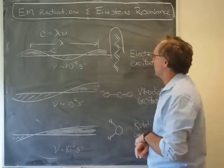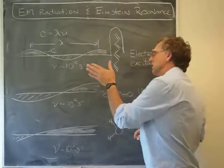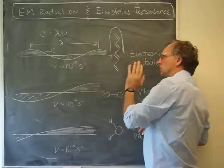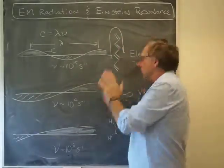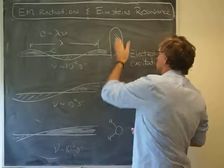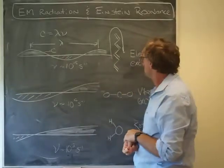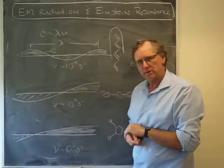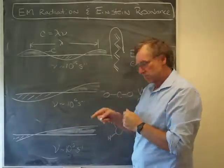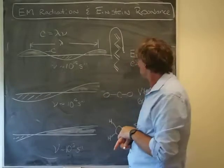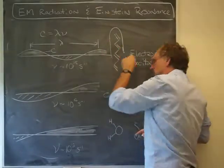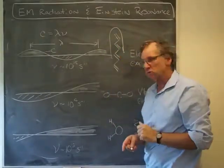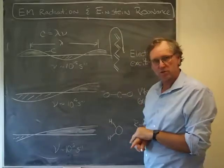And light, in order to interact and deliver energy to those electrons as they're going up and down that delocalized molecule, needs to have a frequency of about 10 to the 15 cycles per second in order to be in resonance with the natural frequency that electrons typically like to move up and down molecules.